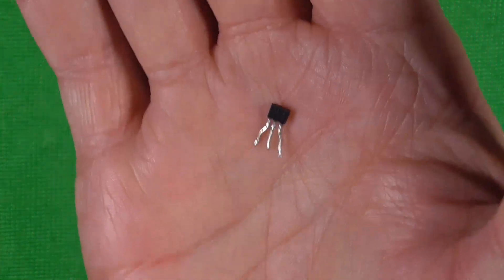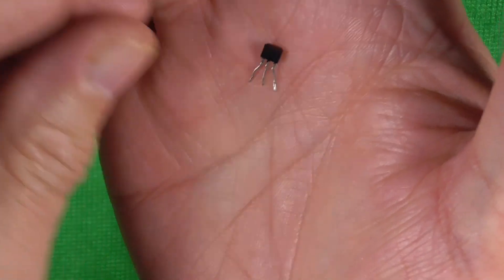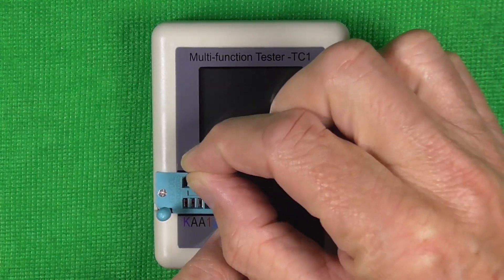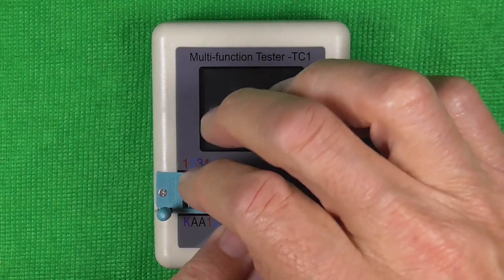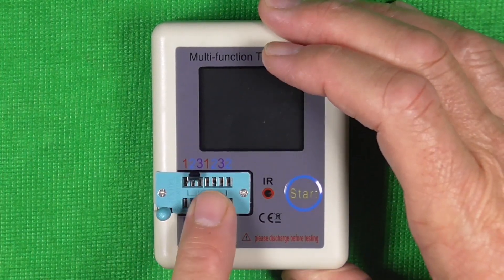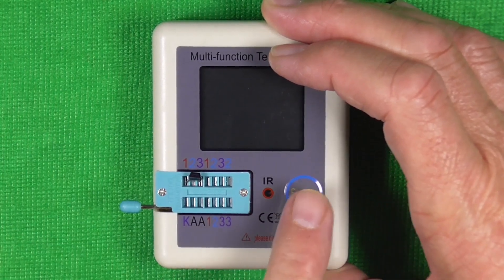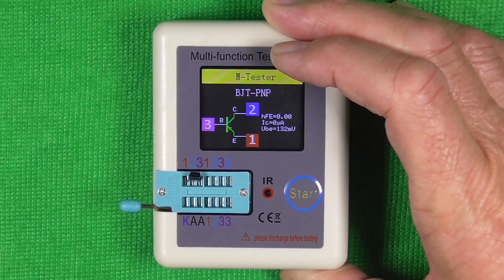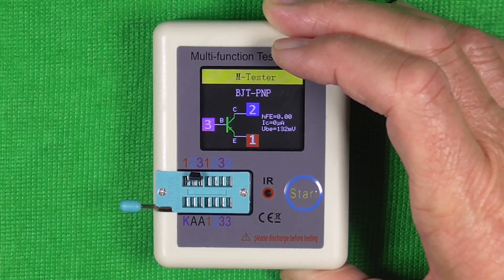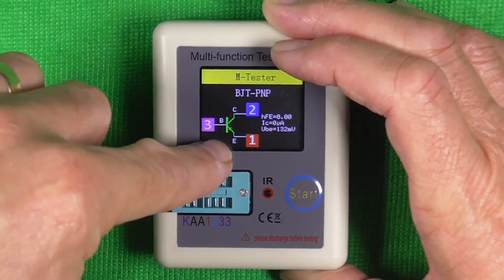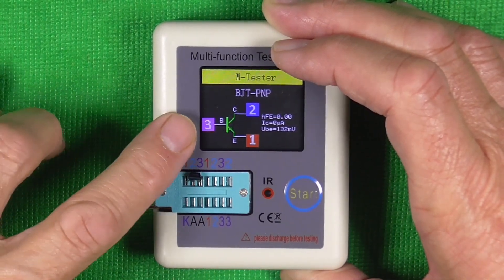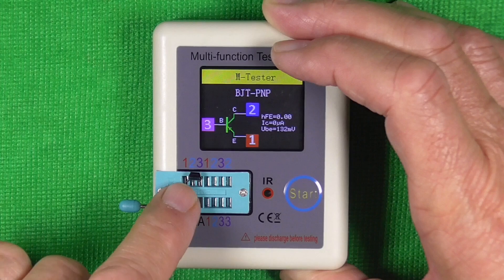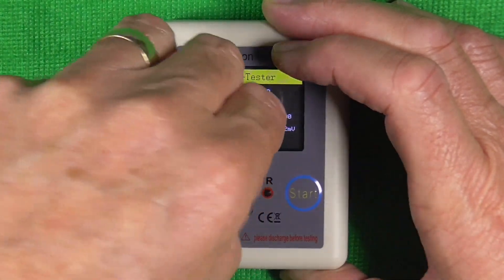So I've just found this transistor in my little spares box. It looks as though it is a used one. I haven't a clue what it is, to be fair, so we'll test that. We'll stick it in the machine like that, a leg in each one—one, two, three. Close the lever, press start. And it's a PNP transistor. It's identified the base, collector, and emitter. Base is on pin 3, collector is on pin 2, and emitter is on pin 1.